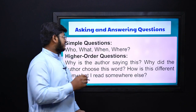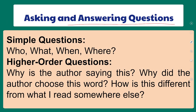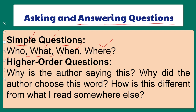Asking and answering questions is our main topic, and we have two types. Simple questions use question words like who, what, when, and where — asking who is doing something, what something is, or where something is happening. Examples: Who is writing the letter? What is the letter about? When and where was the letter written? These are simple questions and do not require reading the text at a deeper level.